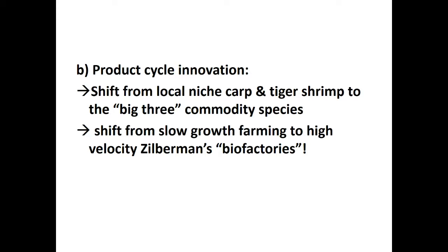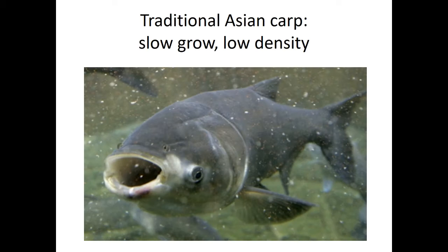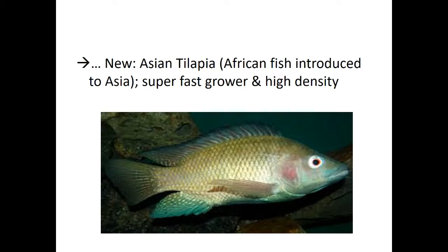There's also a product cycle innovation in the bioeconomy. You go from local niche products — basically carp and tiger shrimp — to the big three commodity species now eaten in the US and across Asia, almost none of them originating where they're now produced, just as apples are from Kyrgyzstan yet are considered a basic American product. The basic idea, as discussed in this bioeconomy conference, is shifting from slow-growth farming to high-velocity production — what David Zilberman calls bio-factories — shifting toward species and technologies that allow production almost like a factory.